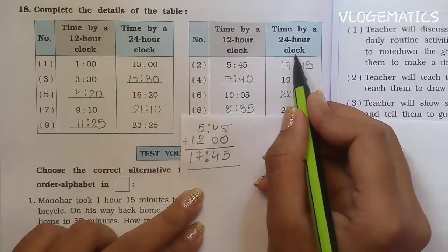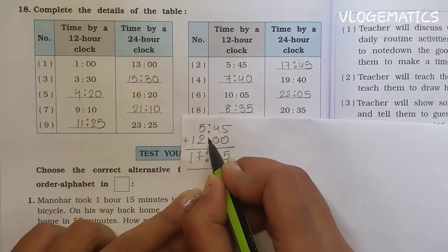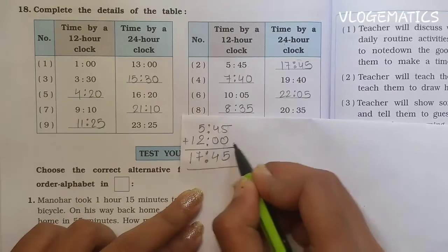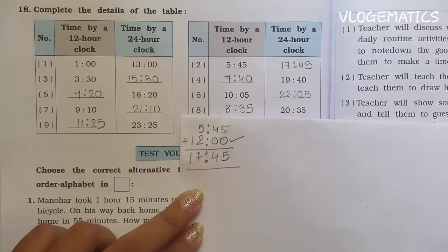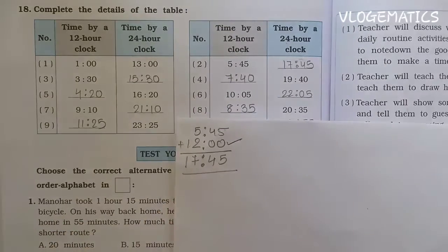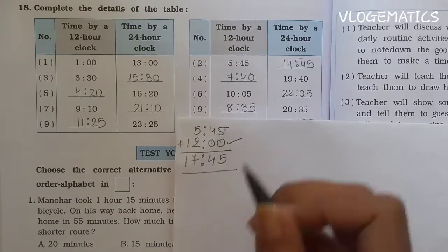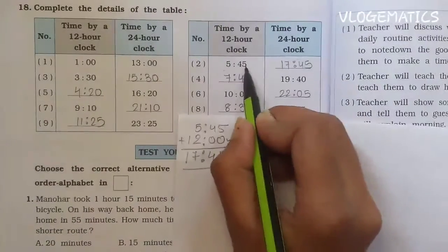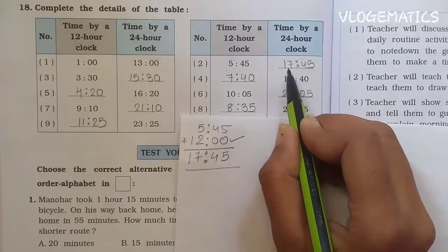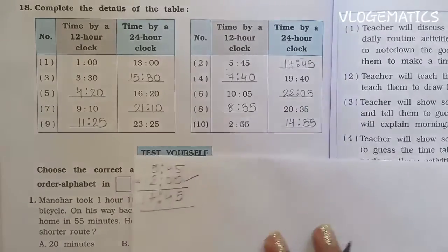Number 2: if we are given a time in 24-hour clock and need to write it in 12-hour clock, we simply subtract 12. So 17:45 in 24-hour clock corresponds to 5:45 in 12-hour clock.